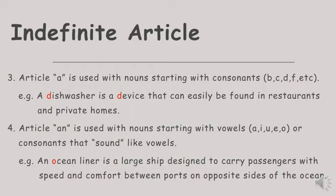What about an? Article an is used with nouns starting with vowels, like a, i, u, e, and o, or consonants that sound like vowels. Artikel an digunakan dengan kata benda yang berawalan huruf vokal a, i, u, e, o, ataupun huruf konsonan yang berbunyi seperti huruf hidup. See the example: An ocean liner is a large ship designed to carry passengers with speed and comfort between ports and opposite sides of the ocean. Di sini kata benda ocean berawalan huruf hidup yaitu o, maka menggunakan kata sandang an instead of a.